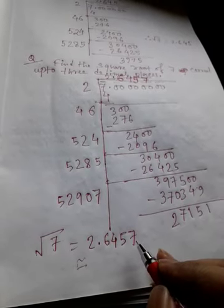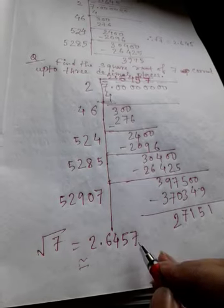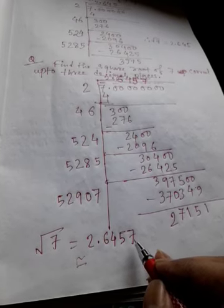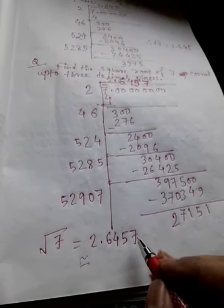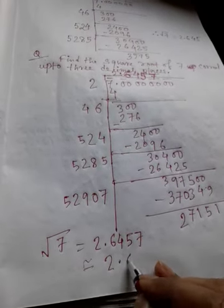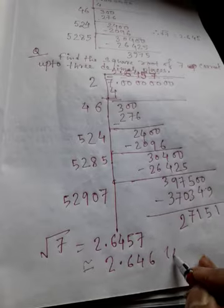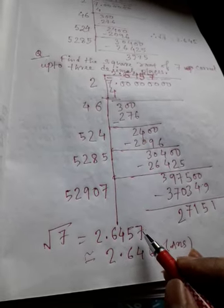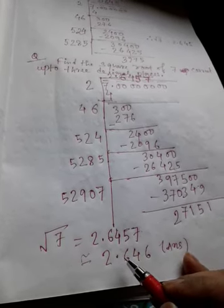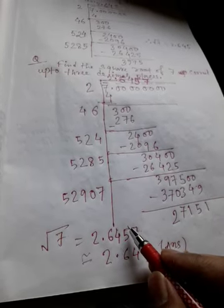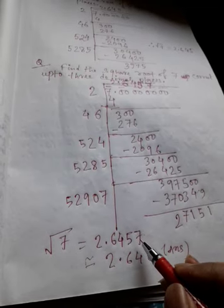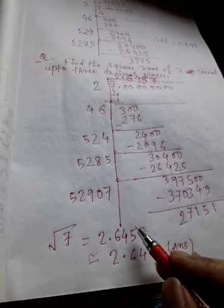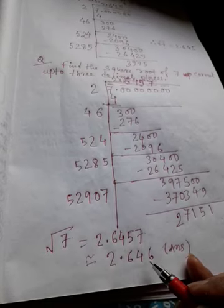We look at the last digit, which is 7. We check whether 7 is greater than 5 — yes, it is greater than 5. So we add 1 to the previous digit. Therefore the answer is 2.646. If the last digit were not 7 but say 3, then 1 would not be added to 5, and the answer would be 2.645. Clear: if the number is greater than 5, then 1 is added. Since 7 is greater than 5, we added 1 to the previous digit, so the answer is 2.646.